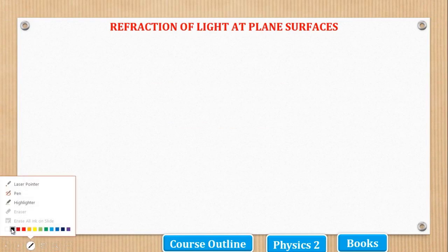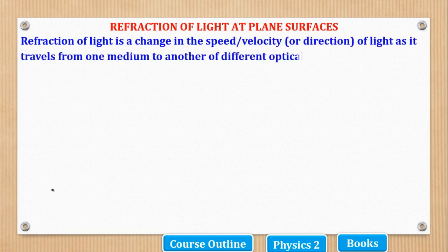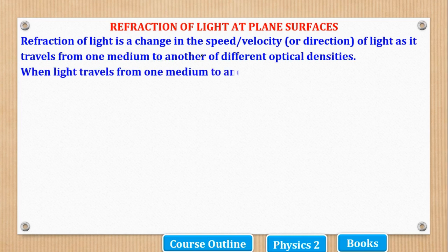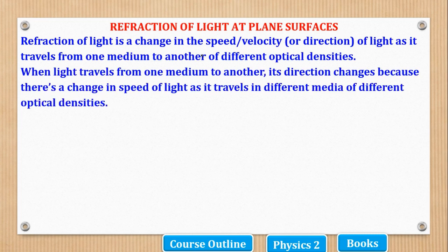Now we shall start our topic of Refraction of Light at Plane Surfaces. In O-Level we covered some basics of refraction and did some calculations. Now we will remind ourselves what we covered and also build on that. Refraction of light is the change in speed, velocity, or direction of light as it travels from one medium to another of different optical densities. When light travels from one medium to another, its direction changes because of the change in speed based on the optical densities.